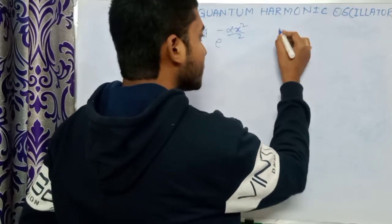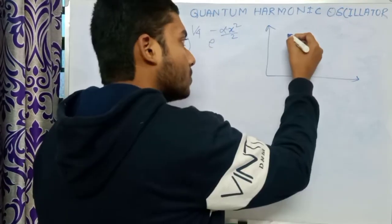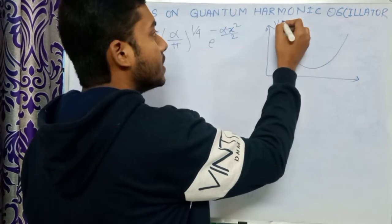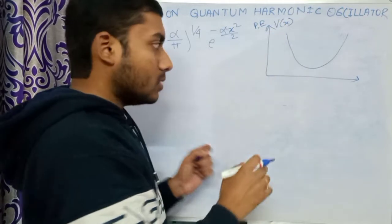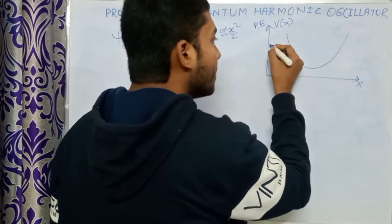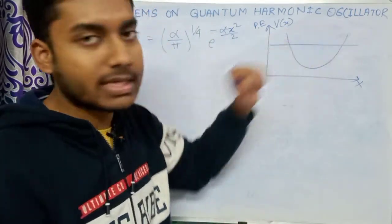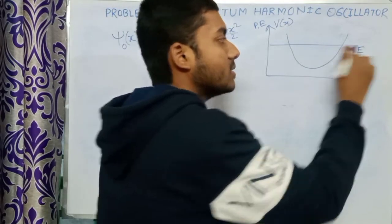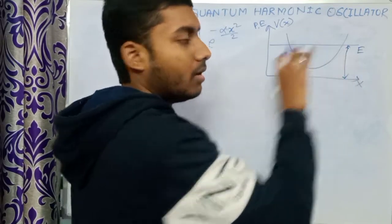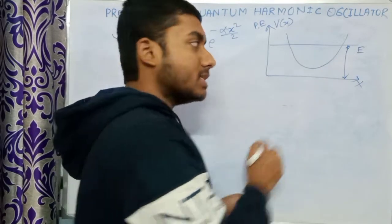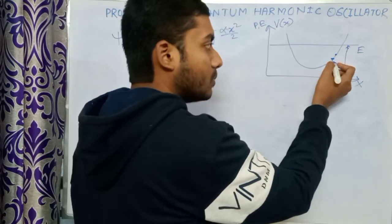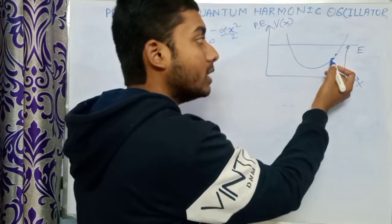In classical mechanics, the potential energy curve V(x) looks like this — this is the curve of potential energy versus position x. If we have a particle moving with total energy E, this is the constant total energy of that particle, and each point on the potential energy curve denotes the potential energy at that position.